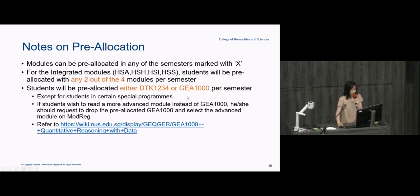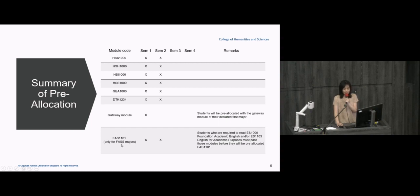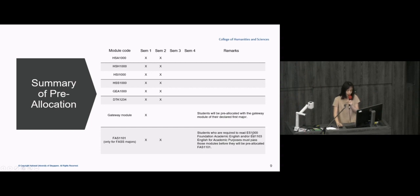GEA 1000 is the module we pre-allocate to everyone because most people will end up taking it, but you do have a choice not to take it. For the writing module, there is a caveat: to take it, you need English proficiency. If you need to read ES 1000 or ES 1103, read those modules as early as possible because if you don't pass them, you cannot take the writing module.